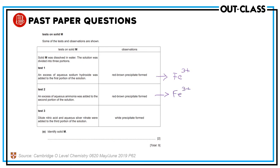With aqueous ammonia, a red-brown precipitate also forms, confirming iron(III) ions. With dilute nitric acid and silver nitrate solution — the test for halide ions — a white precipitate is seen, indicating chloride ions. So the salt is iron(III) chloride, FeCl₃. You can easily identify the ions from these tests.